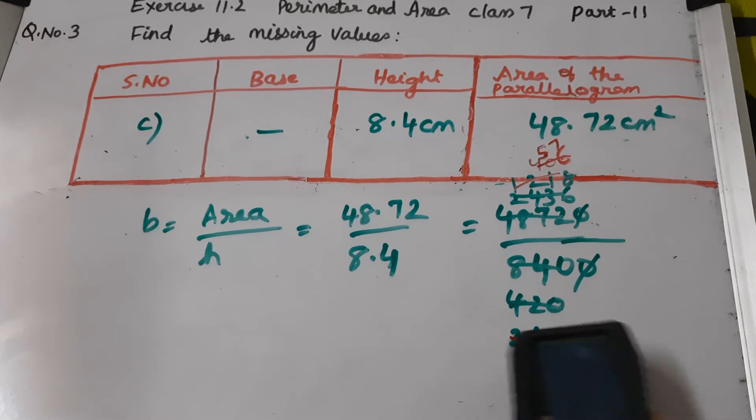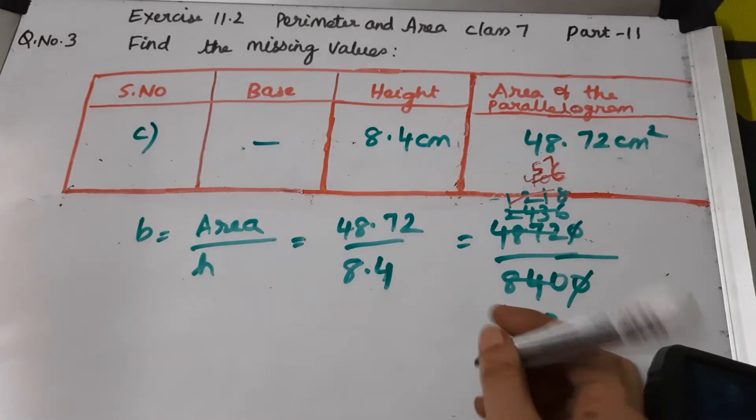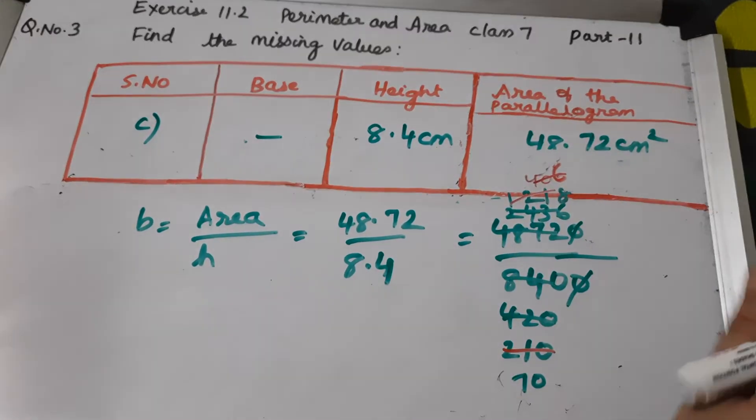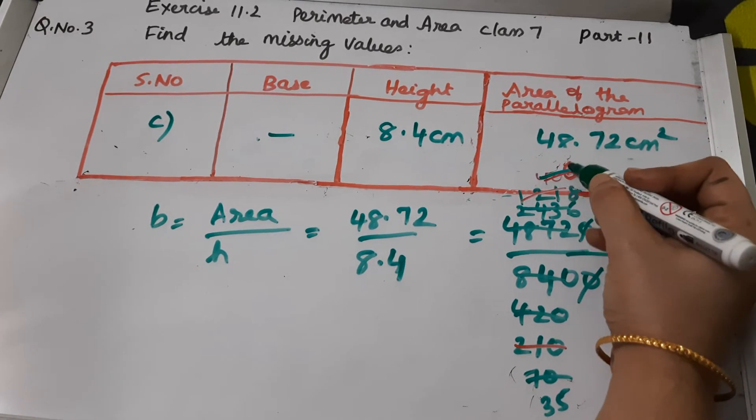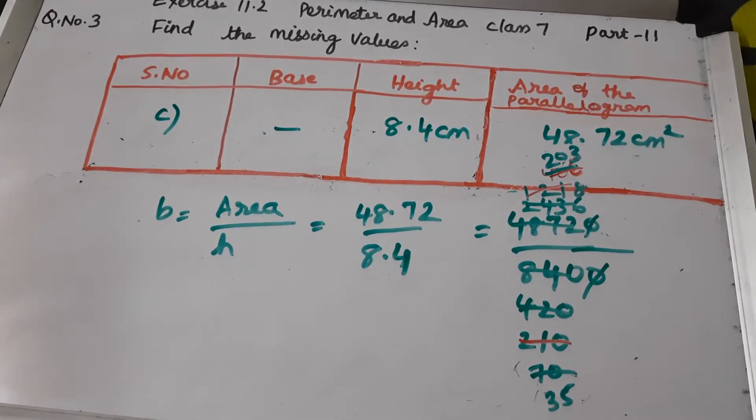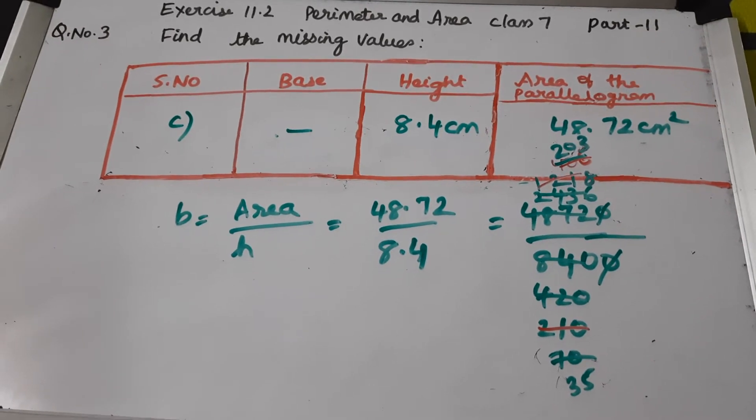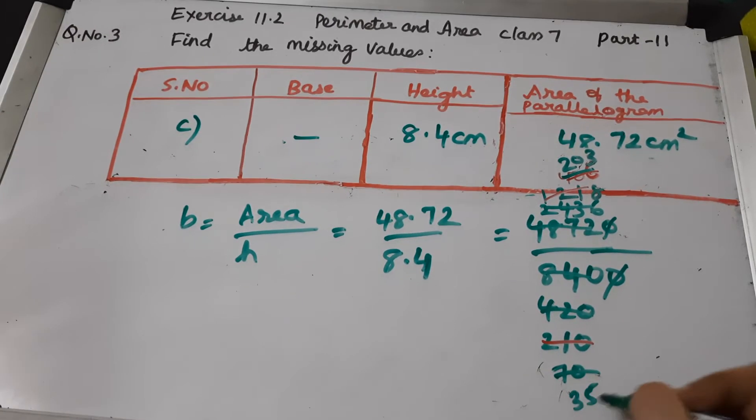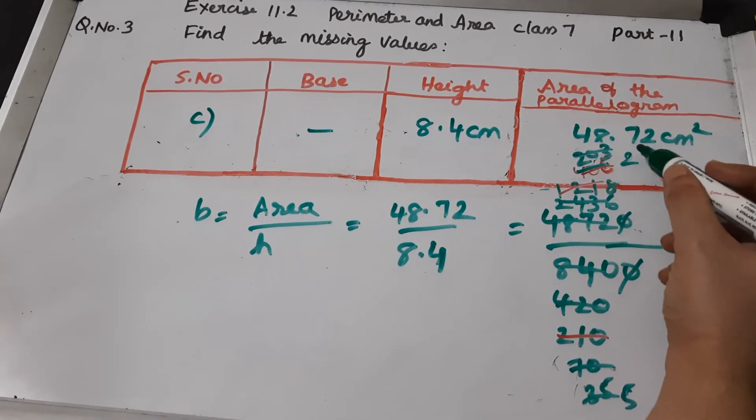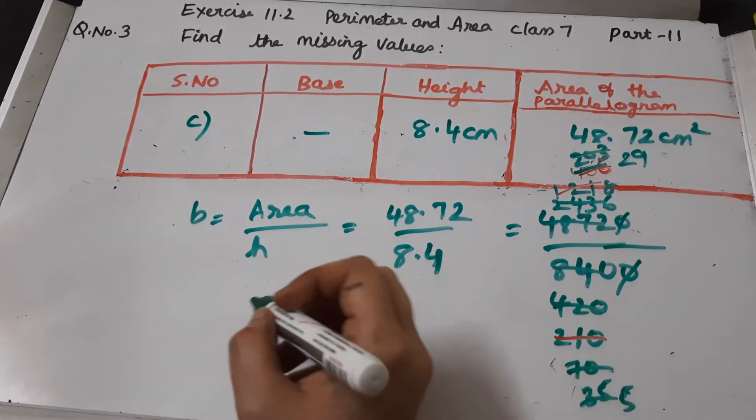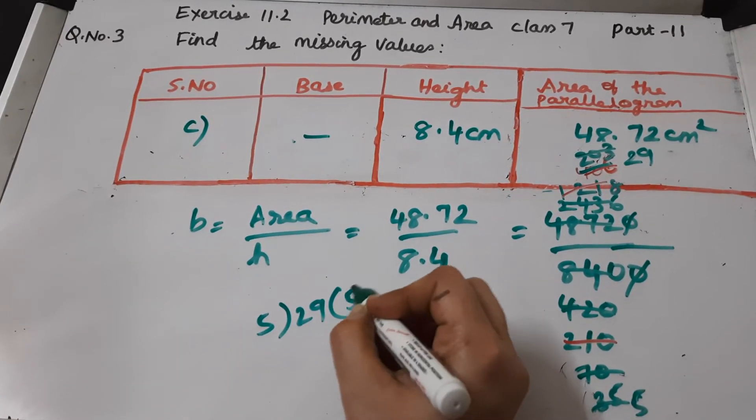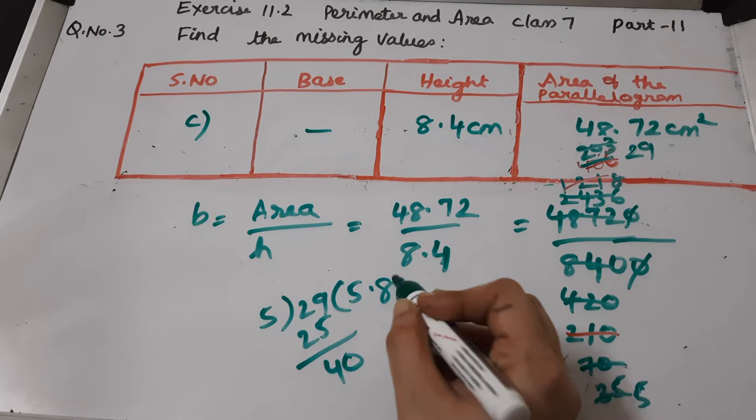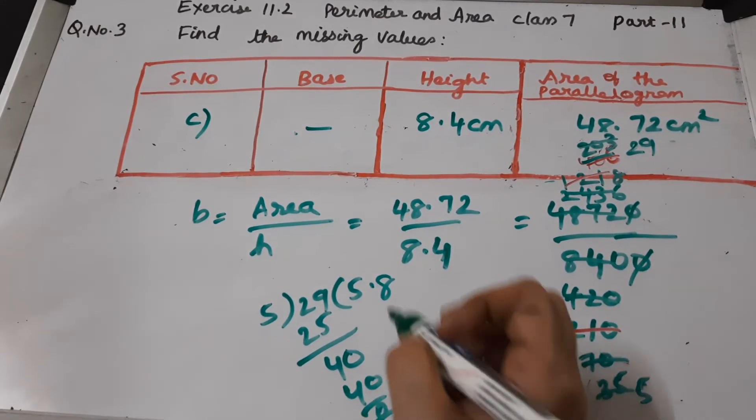Now we will do it with 2. We will do it with 2 for ease. It goes in 7 table - 7 times 5 are 35, 7 times 2, and 9. We can't further simplify, so we will divide it. The answer is 5.8 centimeters.